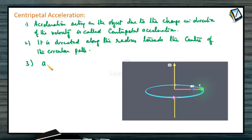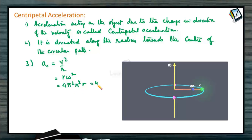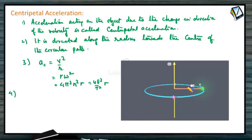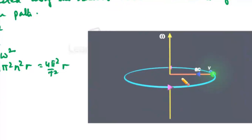Magnitude of centripetal acceleration or radial acceleration is V² / R, or it can also be written as Rω². Since ω = 2πN, it can be written as 4π²N²R, or in terms of time period it is 4π² / T² × R. The direction of centripetal acceleration is always directed towards the centre — it is always perpendicular to the velocity vector. This is the centre-seeking acceleration.